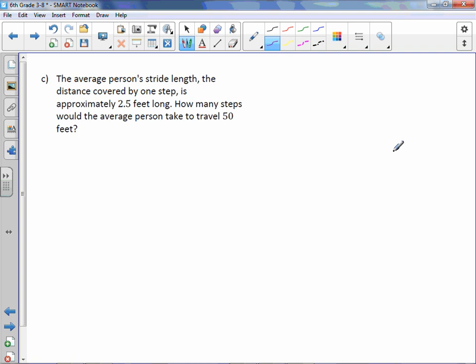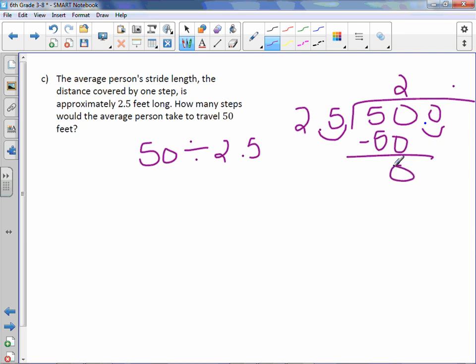Letter C. The average person's stride length, the distance covered by one step, is approximately 2.5 feet long. How many steps would the average person take to travel 50 feet? So we are going to take 50 and divide it by 2.5. Move the decimal over 1. And remember, our decimal is at the end of a number if it's not visible. Move it over 1. Fill it in with 0. 25 into 50 is twice. Minus 50 is 0. Carry down the 0. And 25 into 0 is 0. Subtracting 0. So how many steps? 20 steps.